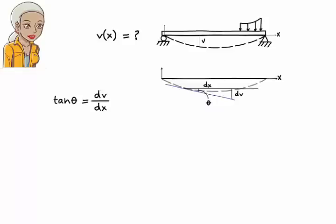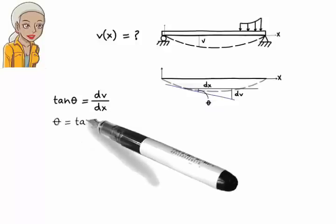Let's make a simplification here. Since a beam's deflection is relatively small compared to the beam's length, then theta is a relatively small angle. Therefore, we can equate tangent of theta to the angle itself. That is, if theta is given in radians, we can write theta equals tangent theta.